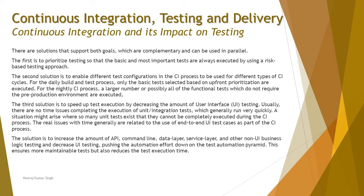There are solutions that support both goals, which are complementary and can be used in parallel. The first solution is to prioritize testing so that the most basic and important tests are always executed, using a risk-based testing approach. The second solution is to enable different test configurations in the CI process for different types of CI cycles. For the daily build and test process, only the basic tests selected based on upfront prioritization are executed.